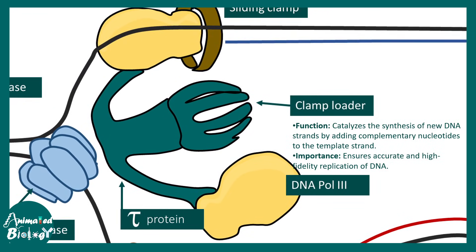Then there is DNA polymerase, whose main job is to synthesize a new strand. It can extend the existing RNA primer at the 3' hydroxyl group, incorporating nucleotides at the 3' hydroxyl group. This leads to the incorporation of new bases as it copies the entire template strand, adding new nucleotides against that particular template strand.